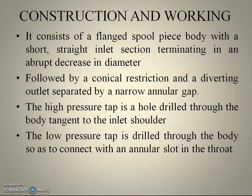Now for construction and working: it consists of a truncated full-piece body with a short straight inlet section, terminating in an abrupt decrease in diameter, followed by a conical restriction and a diverging outlet separated by a narrow annular gap. The high pressure tap is a hole drilled through the body tangent to the inlet shoulder. The low pressure tapping is drilled through the body to connect with an annular slot in the throat section.